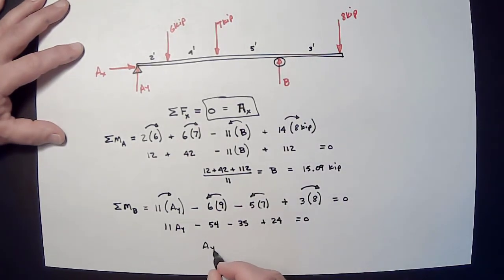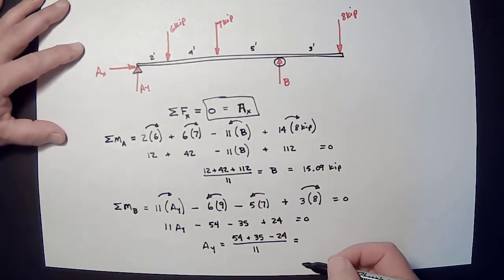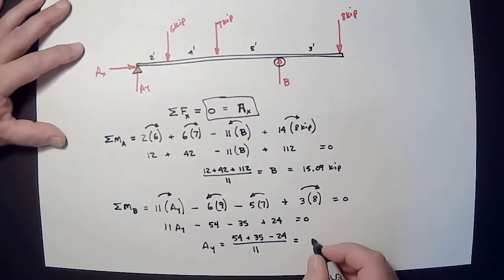AY equals. Move the negative 54 over. Change its sign. Move the negative 35 over. Change its sign. Move the positive 24 over. Change its sign. Divide everything by 11. And I will get 5.91 kips.